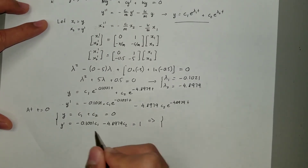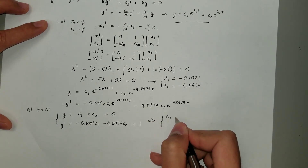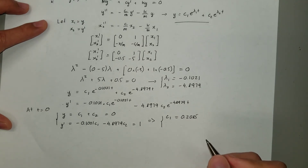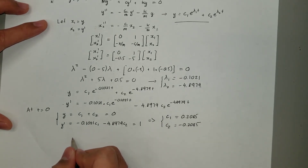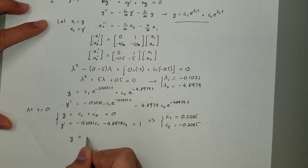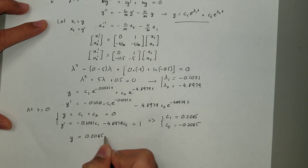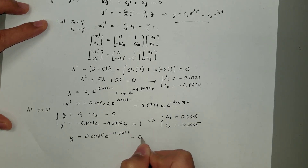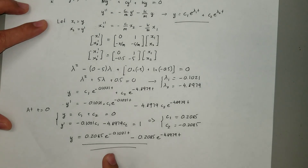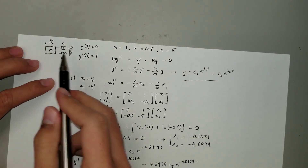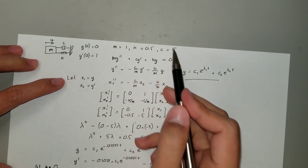Solving this system of equations, we find c1 equals 0.2085 and c2 equals -0.2085. That's how we solve for the solution of the mass spring damper system. The final solution is y equals 0.2085 e to the -0.1021t minus 0.2085 e to the -4.8979t, with the given boundary conditions, mass, spring constant, and damping constant.